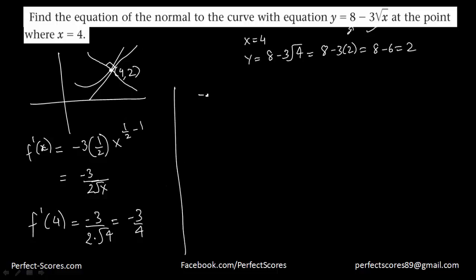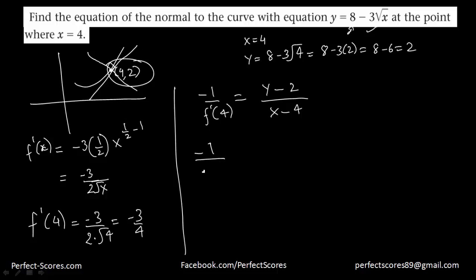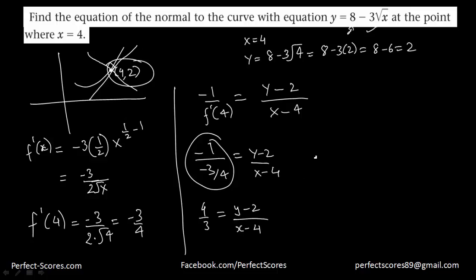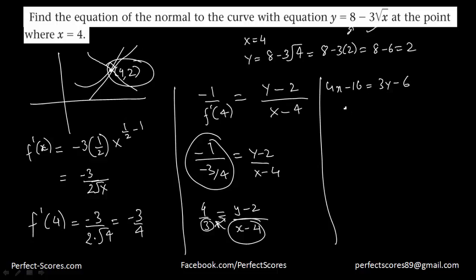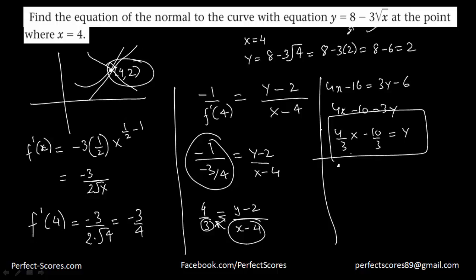The negative reciprocal of f'(4) — that is, the slope of the normal — is negative 1 divided by negative 3 over 4, which equals 4 over 3. Applying the formula: 4 over 3 equals (y minus 2) over (x minus 4). Cross-multiplying: 4(x minus 4) equals 3(y minus 2), giving 4x minus 16 equals 3y minus 6, so 4x minus 10 equals 3y, meaning y equals (4/3)x minus (10/3). This is the equation of the normal to the curve at that point.